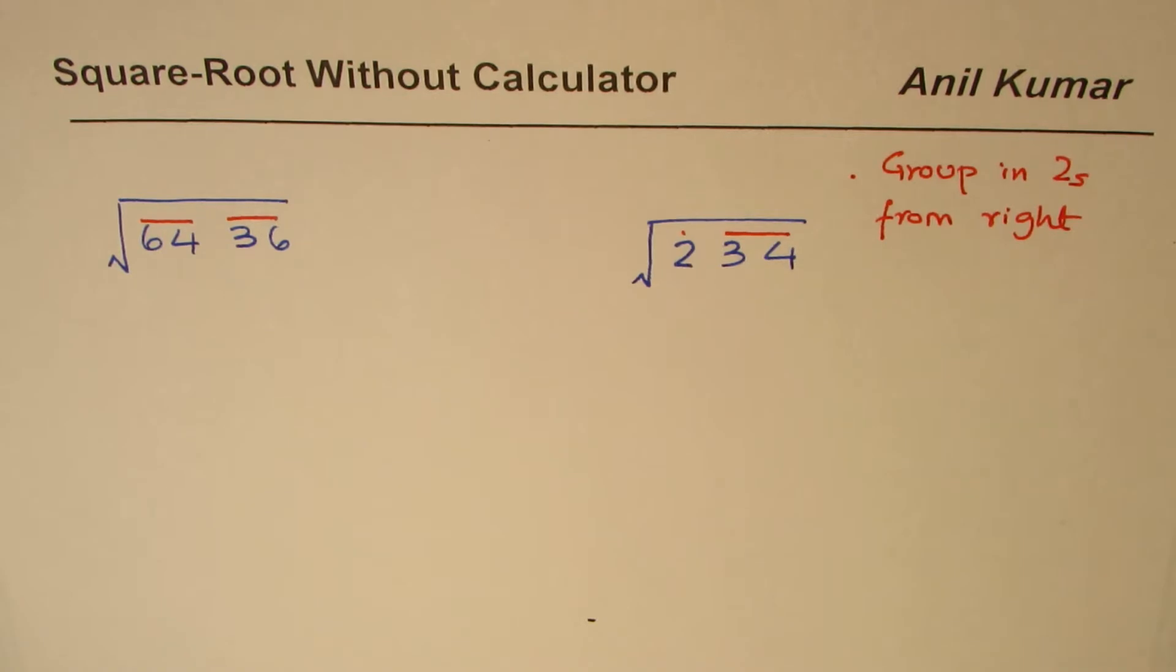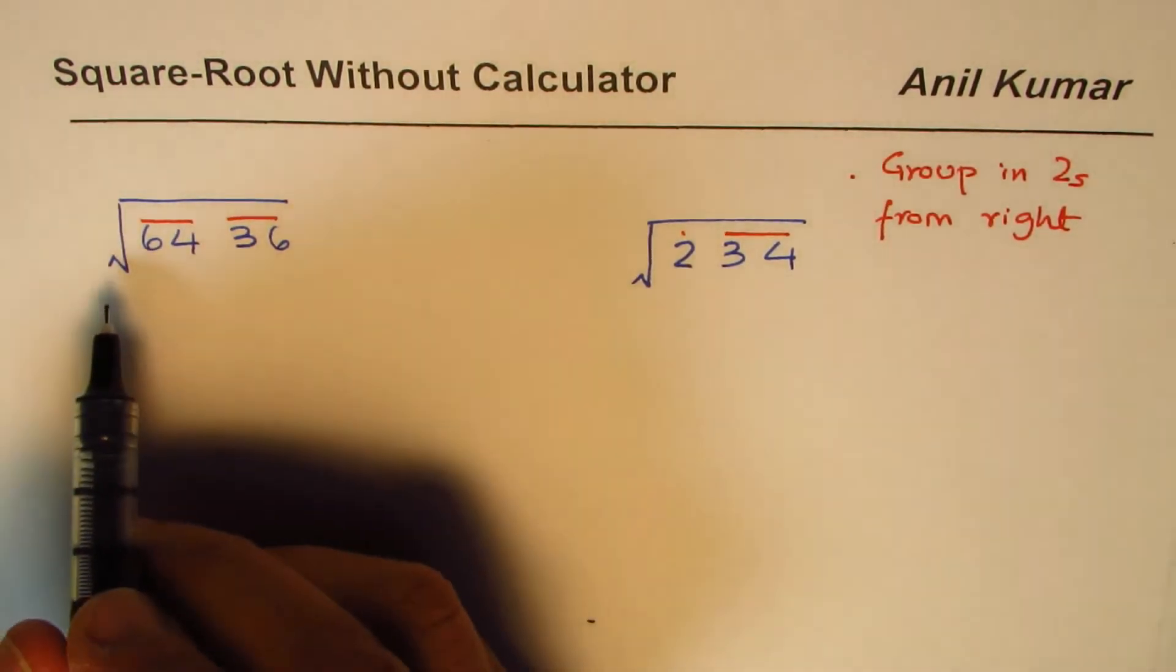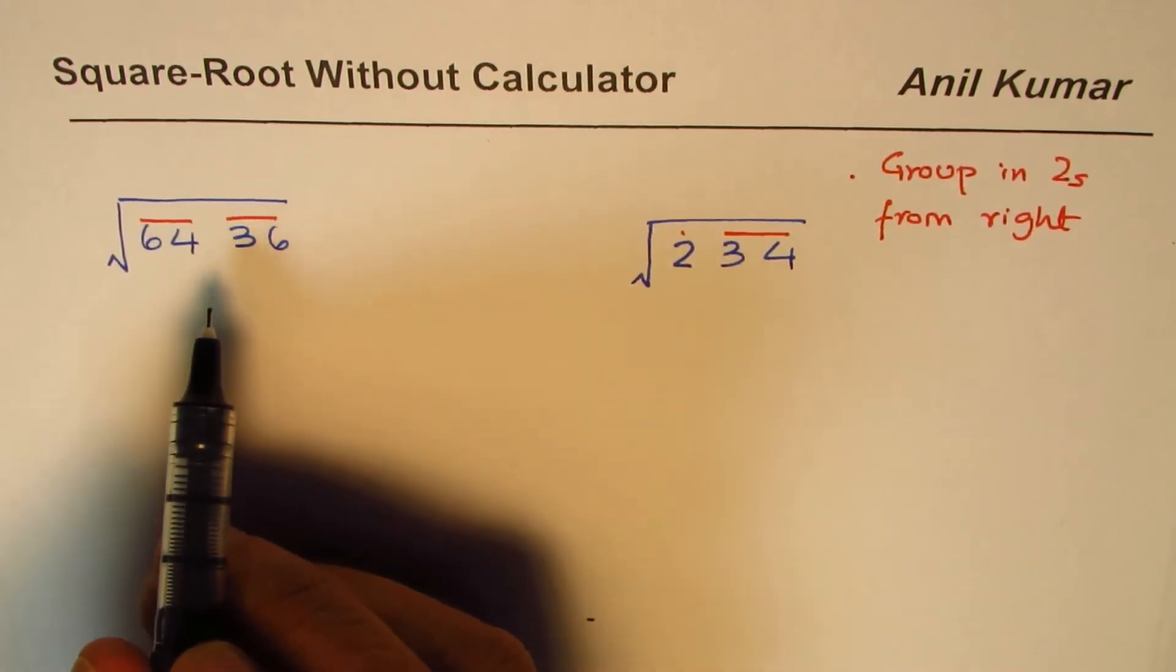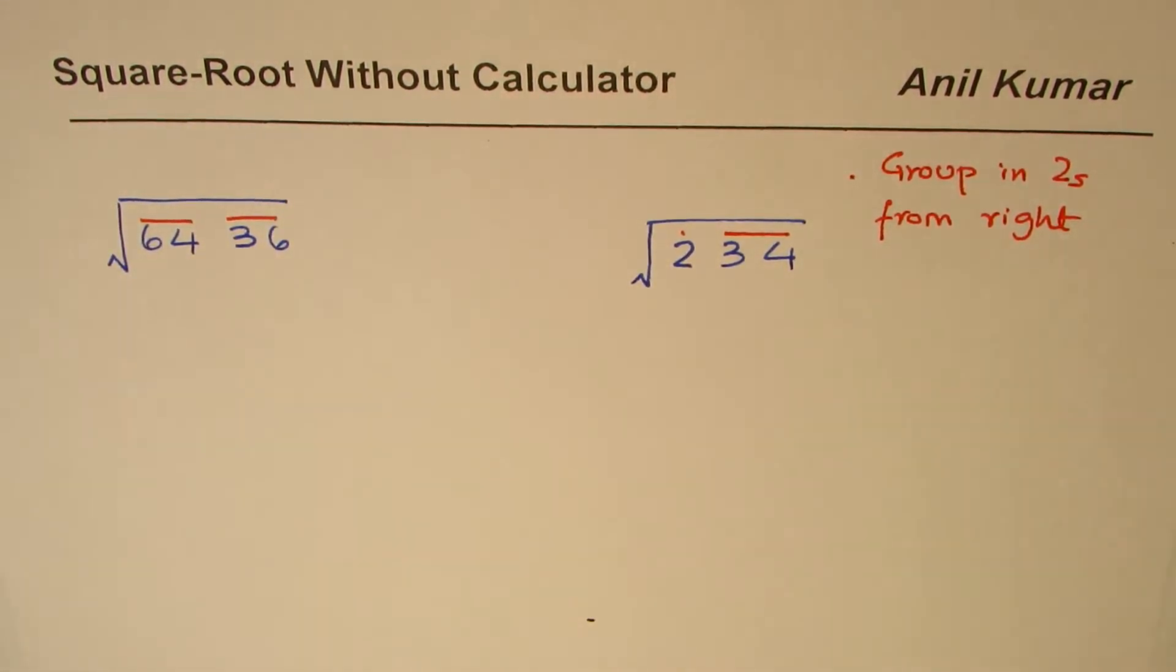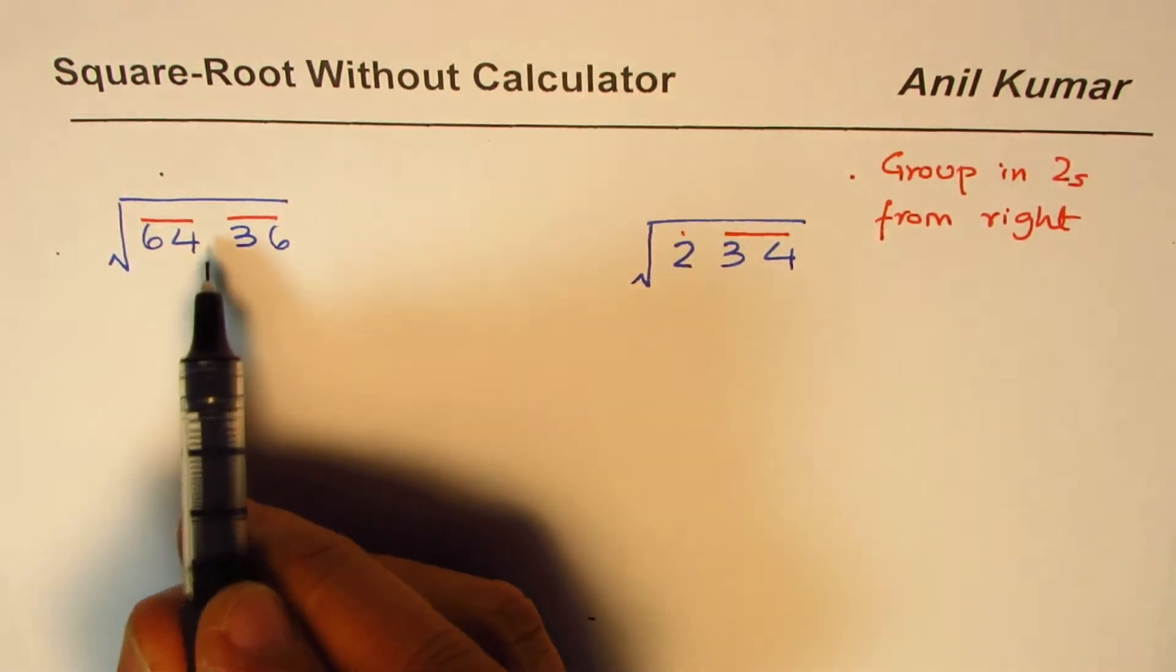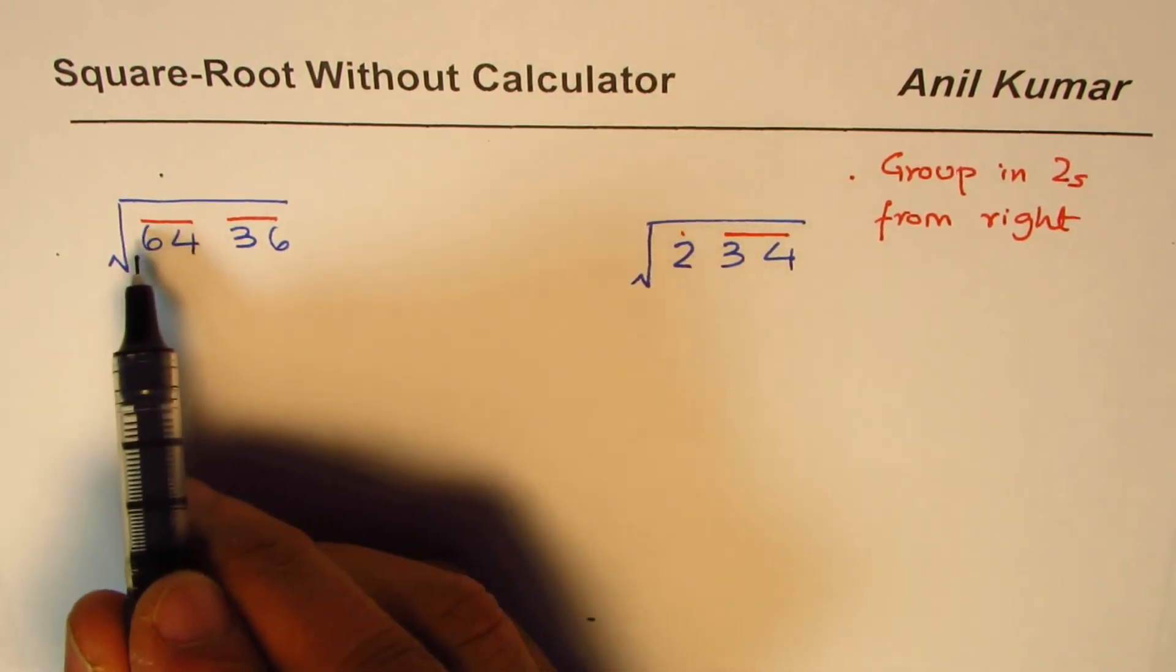Let's start with the process of finding the square root. You have to write a number which can go into the first group. In this case the first group is 64, and as you know 8 times 8 is 64.